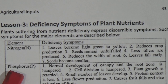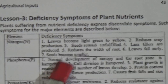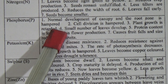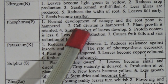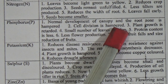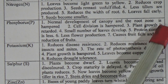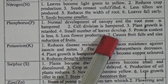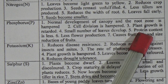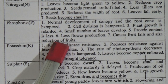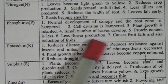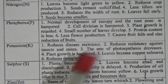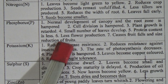Number 2, Phosphorus deficiency symptoms: 1. Normal development of canopy and the root zone is hampered. 2. Cell division is hampered. 3. Plant growth is retarded. 4. Small number of leaves develop. 5. Protein content is less. 6. Less flower production. 7. Causes reduction in fruit size.